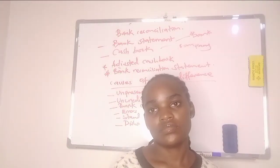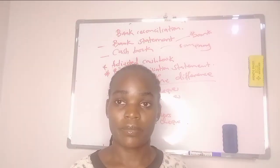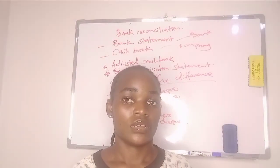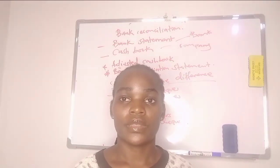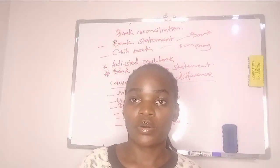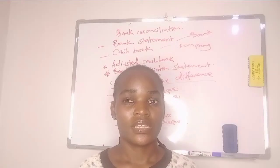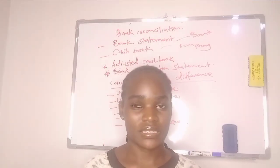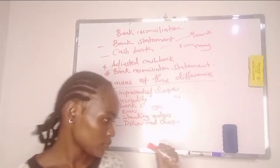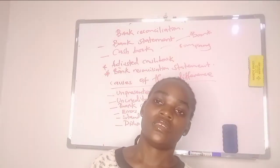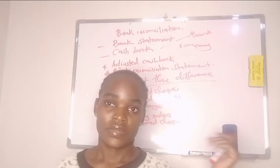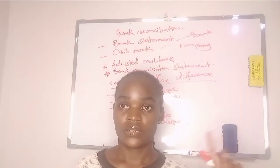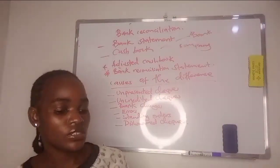Then we have standing orders. A standing order is an instruction given to the bank by the company for the bank to pay the company's bills — for example, water bills, electricity bills, or TV subscriptions at the end of every month. In the case of a standing order payment, that money will be debited in the bank statement but not credited in the cash book.